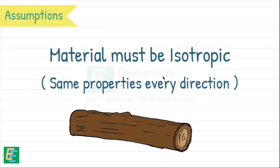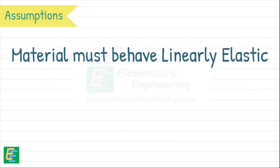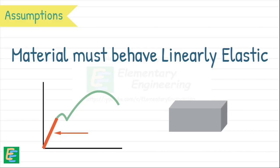It is clear with the example of a piece of wood that it is not isotropic. Its properties are different along the grains and perpendicular to the grains. Third, the material must behave elastically and linearly. That is, stress should be directly proportional to strain, and it should return to its original shape when the load is removed.